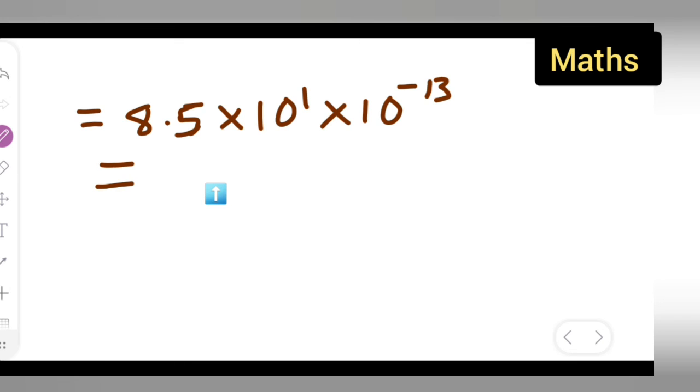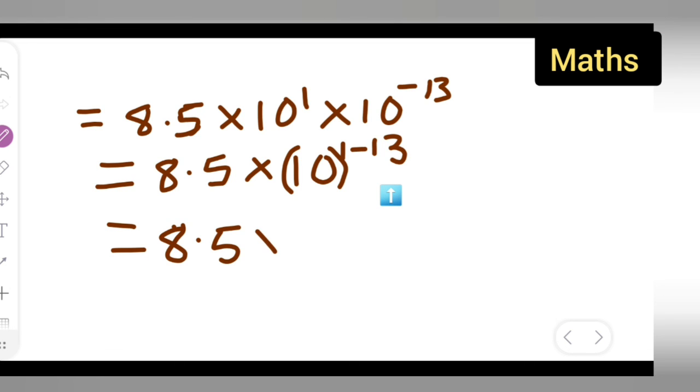So now write down 8.5 multiplied by, now you'll have to subtract this. So 8.5 multiplied by 10 raised to power of minus 12. So 8.5 multiplied by 10 raised to power of minus 12 is your answer. So I hope you'll have understood how to express the following number in standard form. This is your standard form.